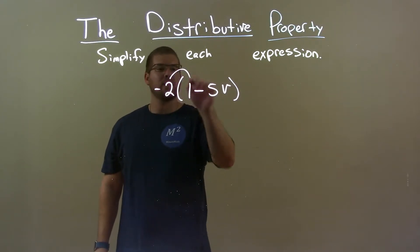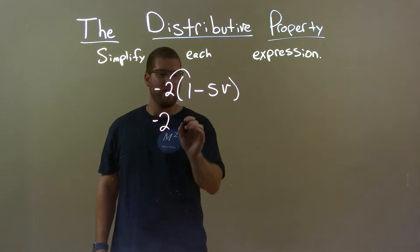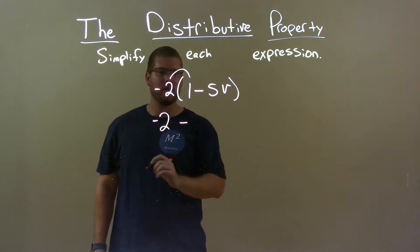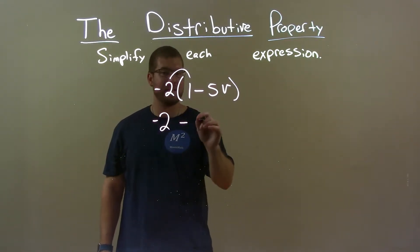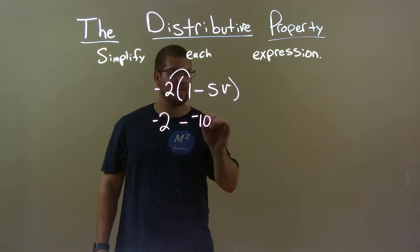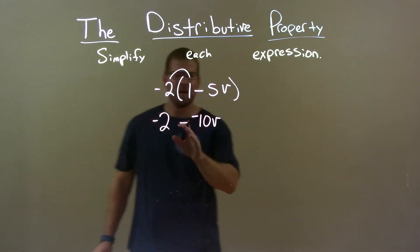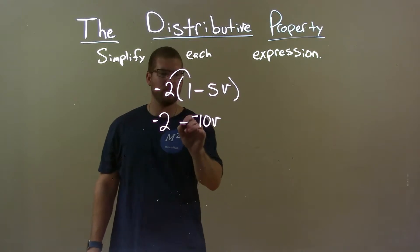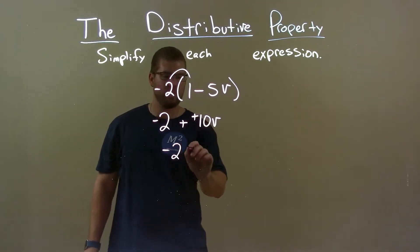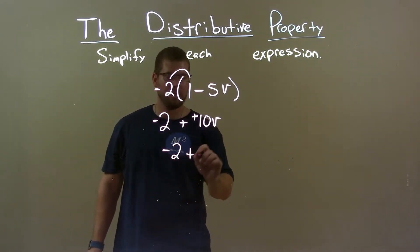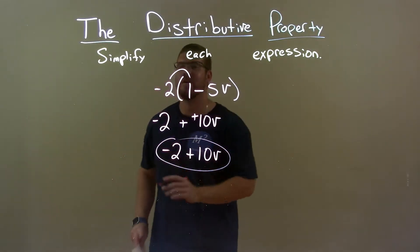Negative 2 times 1 is negative 2. The minus sign is right here. Negative 2 times 5 is negative 10, so negative 10v. And now we have subtracting a negative, which we know is plus a positive. So I can rewrite this to be negative 2 plus 10v, and there we have our final answer.